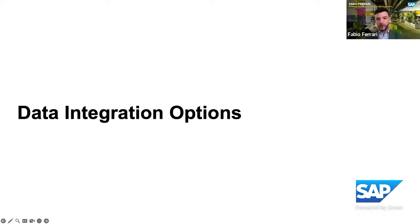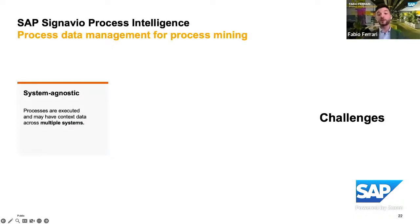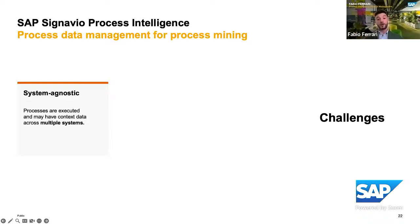After this quick introduction, let's go to the heart of the session: what are our data integration options? The first step of a process mining project is to get data. For SAP Signavio Process Insights there are no particular issues, because you just plug your ECC or S/4HANA system and in minutes get a pre-built data model and process analysis as standard. But in a pure process mining project with Process Intelligence, data integration is one of the main challenges, because you need to be system agnostic — connecting to SAP and non-SAP, cloud and on-premise systems.